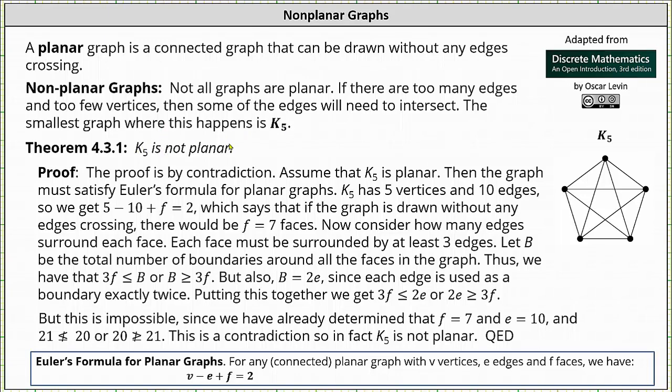Let's prove that K5 is not planar. We will use proof by contradiction. We begin by assuming that K5 is planar. Then the graph must satisfy Euler's formula for planar graphs. K5 has 5 vertices and 10 edges indicating v equals 5 and e equals 10.